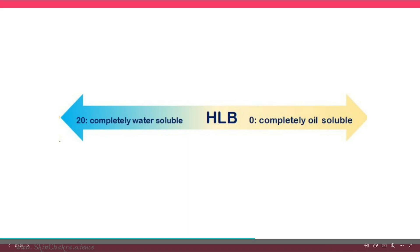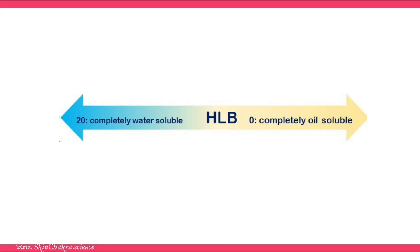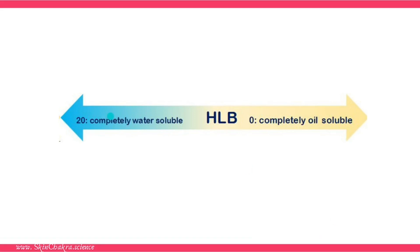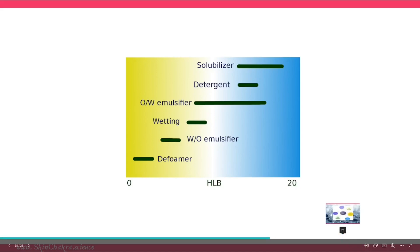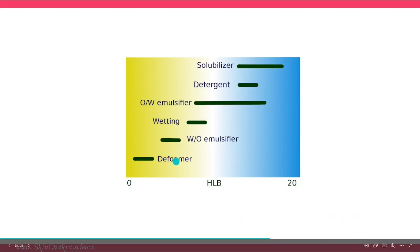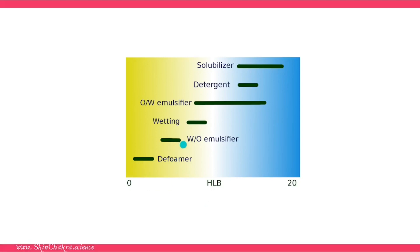The HLB system is a numeric system from 0 to 20. At 0, the molecule is completely oil-soluble with nothing hydrophilic. At 20, it's the other extreme — completely water-soluble. Everything in between is a surfactant with a certain HLB. Depending on the HLB, we have different properties — from defoamers to water-in-oil emulsifiers, wetting agents, oil-in-water emulsifiers, detergents, and solubilizers.